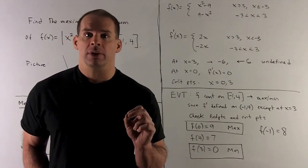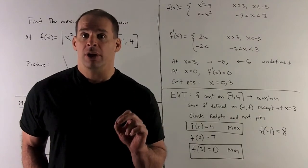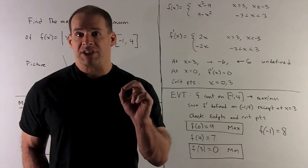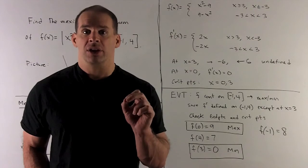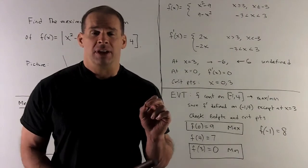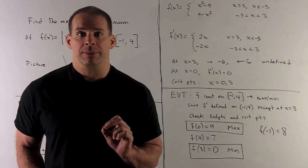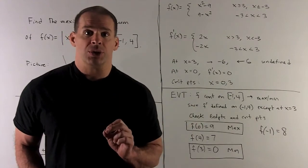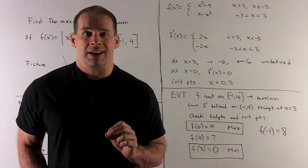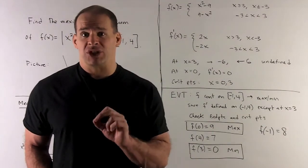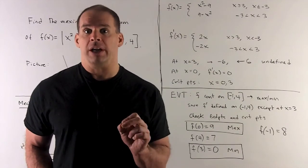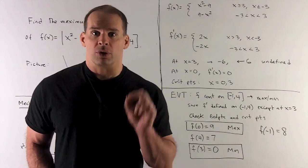For x = 3: the left-hand derivative from the piece -2x approaches -6 as x → 3, and the right-hand derivative from 2x approaches +6 as x → 3. Since -6 ≠ 6, the tangent lines from left and right don't agree, so the derivative is undefined at x = 3. That gives us another critical point. So critical points are at x = 0 and x = 3.